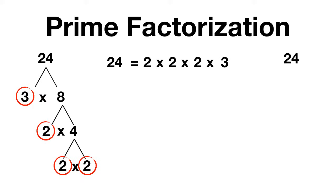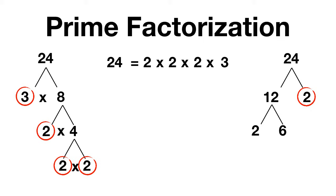Let's try doing this again, but now we'll start by splitting 24 up into 12 times 2. Well 2 is a prime number, so we'll stop there, but 12 could be split up into 2 times 6. Again, 2 is a prime number, but 6 can be split up into 3 times 2. Both 3 and 2 are prime numbers, so we can stop.